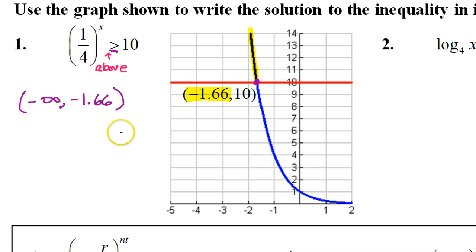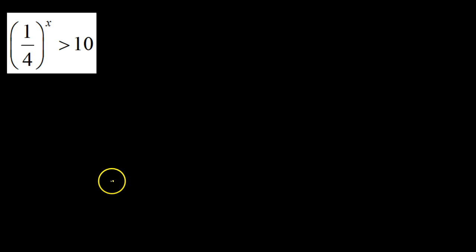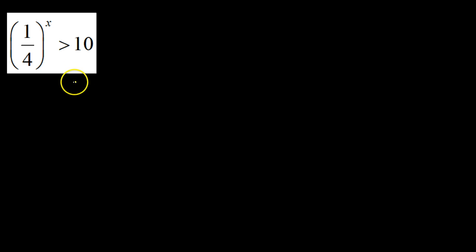Now let's go back and pretend that they didn't give us the graph and do it the long way — just in case you don't get the graph. Here's how you solve it without the graph: you start by solving it as though it were an equation to find the critical value.